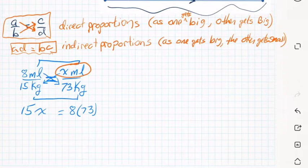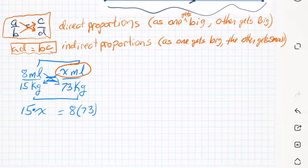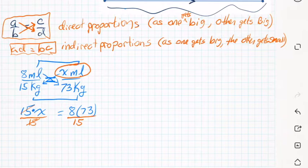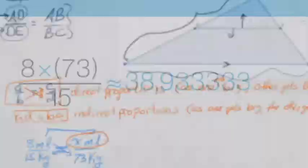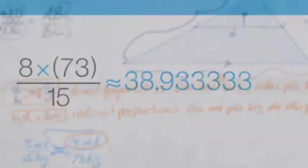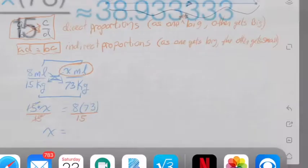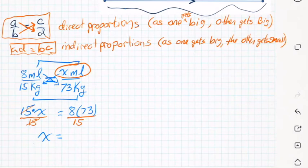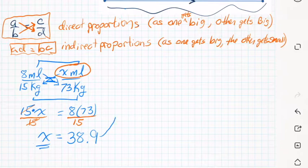To solve for X, the operation between 15 and X is multiplication, so to undo it you divide both sides by 15 — always divide by the number next to the variable. So X equals 8 times 73 divided by 15, which is about 38.9. Going back to the original setup, X was milliliters, so the answer is 38.9 milliliters.